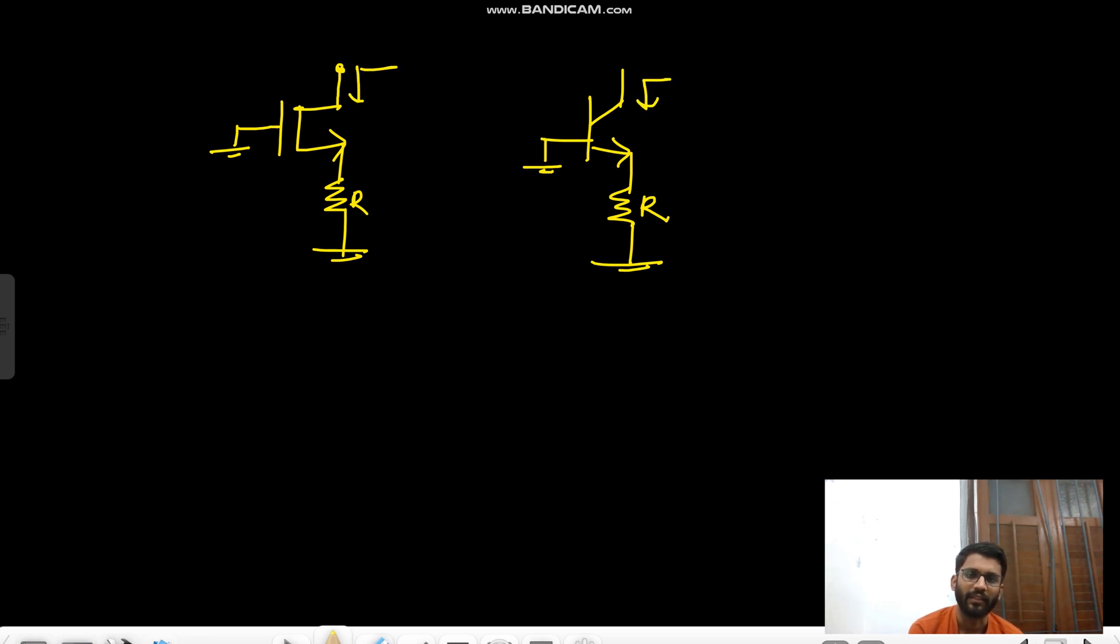So this is what, common gate amplifier, right? Common base amplifier here. And the output resistance of both of them is gm·r0·R. Here also gm·r0·R.